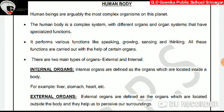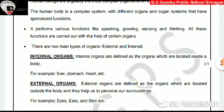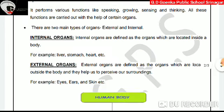There are two main types of organs: internal organs and external organs. Internal organs are defined as the organs which are located inside our body. For example, liver, stomach, heart, etc.